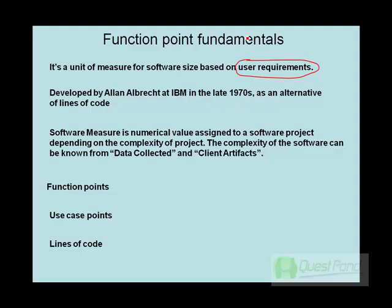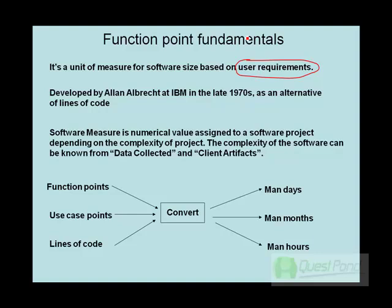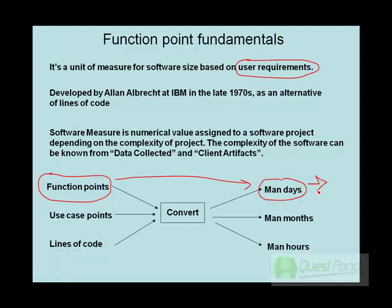Your software measure can be function points, use case points, lines of code, or some other number that identifies the complexity. These numbers can then be fed and converted into a proper number which we can use to do estimation, or to arrive at a monetary factor. By these numerical values you can get man-days, man-months, or man-hours. The whole point of this exercise is to understand how we can calculate function points and then convert them into man-days so that we can arrive at an amount for billing your customer or preparing a proposal.